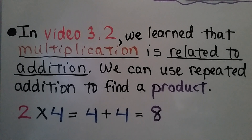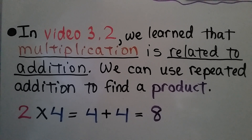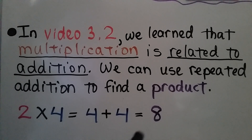In video 3.2, we learned that multiplication is related to addition. We can use repeated addition to find a product. For 2 times 4, we can do 4 plus 4. We have two 4s, and it's equal to 8.